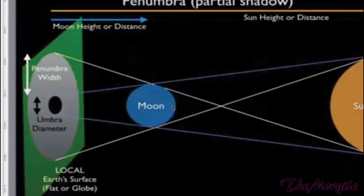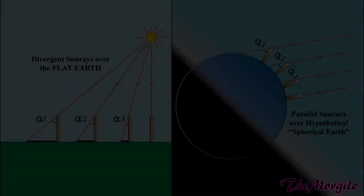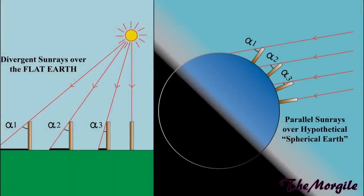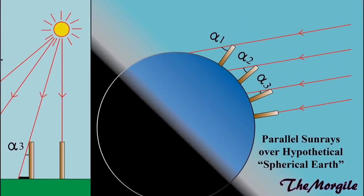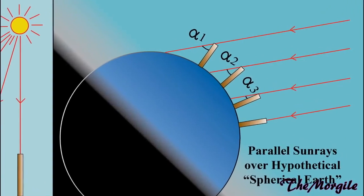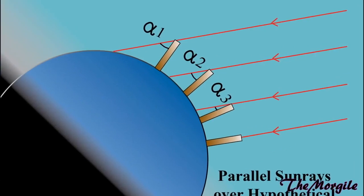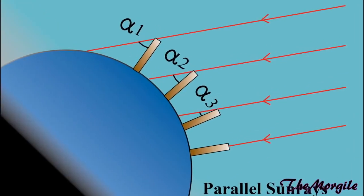Science has a choice between discarding their current accepted value of the moon's size and distance, or they can keep the ridiculous diverging sunbeams theory and get rid of Eratosthenes' method to measure the Earth — which would essentially prove that the field of science has been wrong about the size of the hypothetical ball Earth for 2,000 years. This is because Eratosthenes' method could not have yielded triangulation results anywhere near accurate. Either way, it's one of those damned-if-you-do, damned-if-you-don't scenarios.